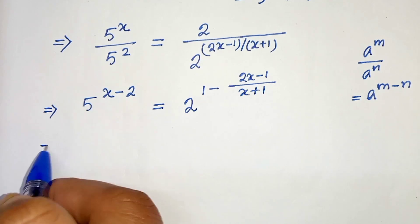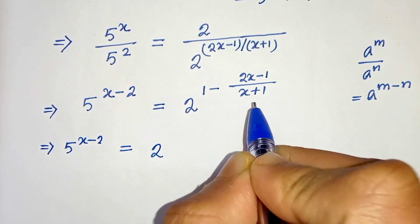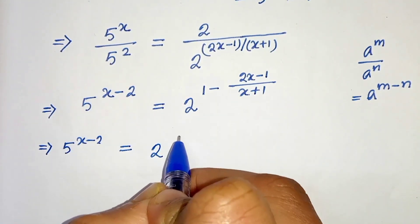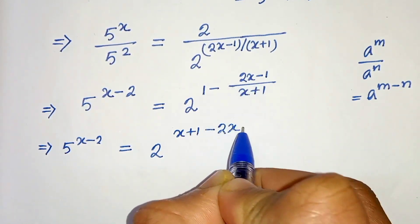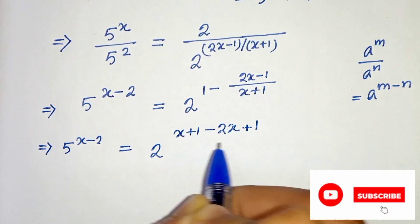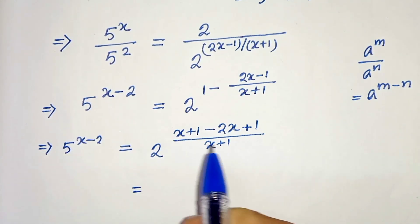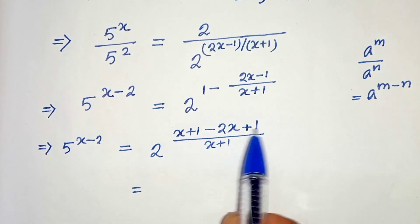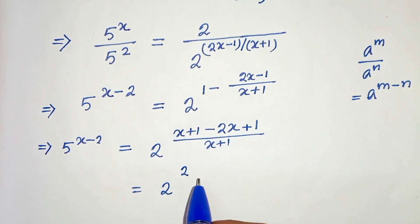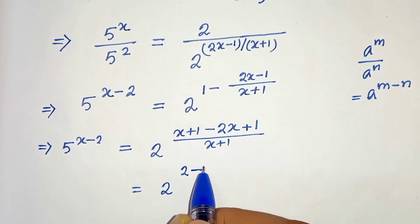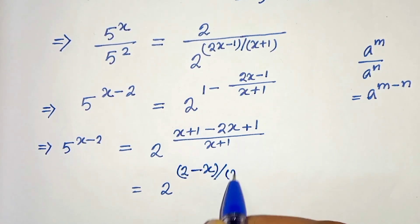So in the next step, 5 to the power (x minus 2) equals 2 to the power — taking LCM (x plus 1): x plus 1 minus (2x minus 1) divided by (x plus 1). Simplifying the numerator: x plus 1 minus 2x plus 1 gives us 2 minus x. So the exponent becomes (2 minus x) divided by (x plus 1).